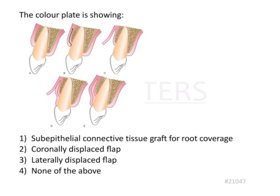The color plate is showing a split-thickness flap that has been created, reflected, with a graft placed over it, then sutured back into place. There is root exposure visible. The answer here is sub-epithelial connective tissue graft for root coverage.